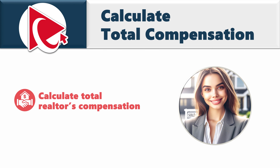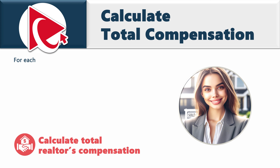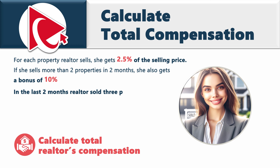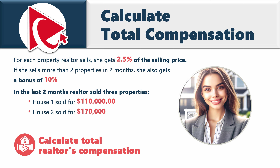You need to calculate total Realtor's compensation. For each property the Realtor sells, she gets 2.5% of the selling price. If she sells more than 2 properties in 2 months, she also gets a bonus of 10%. In the last 2 months, she sold 3 properties: House 1 was sold at $110,000, House 2 was sold for $170,000, and the condominium was sold for $75,000. You need to calculate and select the Realtor's compensation out of 4 possible choices.